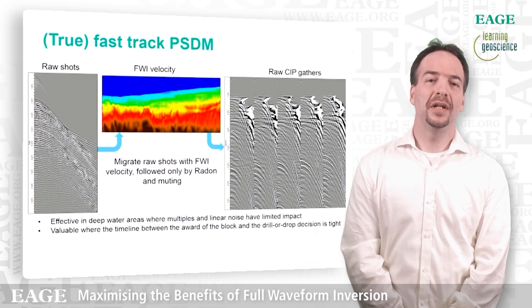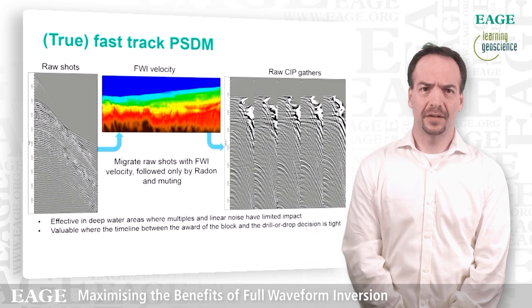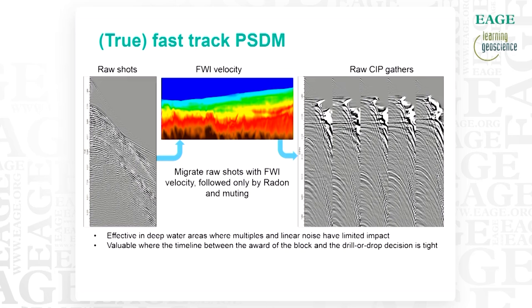In fact, if we believe that we can have an FWI product even before the pre-processing part is concluded, we can introduce a new concept we call the True Fast Track PSDM. In this case the idea is to start migrating the raw shots with an accurate velocity model — so we compromise on the data, we do not compromise on the velocity. Then we do some post-processing just after migration. Obviously it is mostly effective in deep water areas where multiples and linear noise have limited impact, but it could be very valuable when the timeline between award of the block and the drill-or-drop decision is very tight.